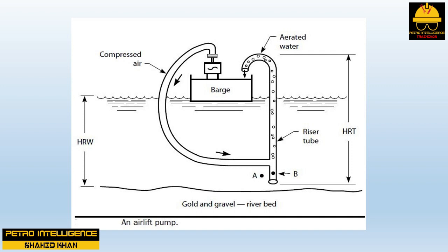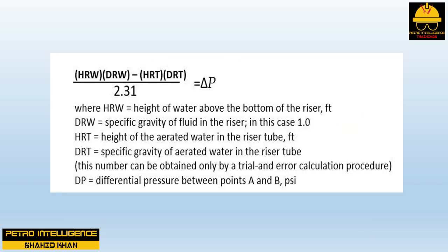The theory of thermosyphon or natural circulation can be illustrated by the airlift pump shown in this picture. This system is used to recover gold-bearing gravel from a river in Africa. Compressed air is forced to the bottom of the river through an airline and injected into the bottom of a riser tube. The aerated water in the riser tube is less dense than the water in the river, creating a pressure imbalance between points A and B, sucking water, gold, and gravel up through the riser tube.